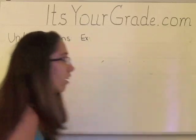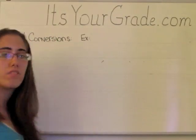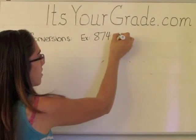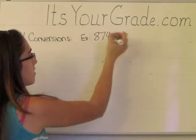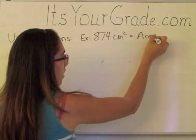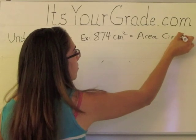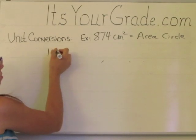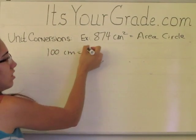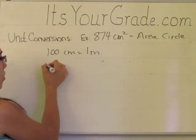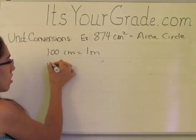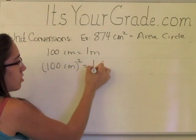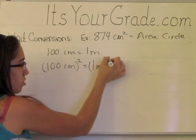So let's take the area of a circle, for example. We have 874 centimeters squared. This is the area of a circle. Well, what do we know? We know that there's 100 centimeters in 1 meter. So if we raise this to a power to make it squared, 100 centimeters squared is equal to 1 meter squared.